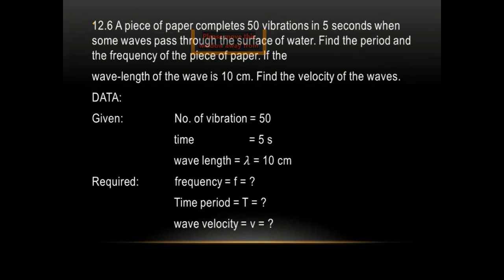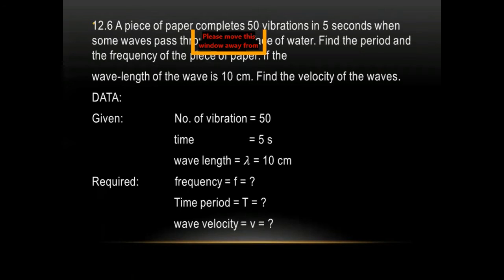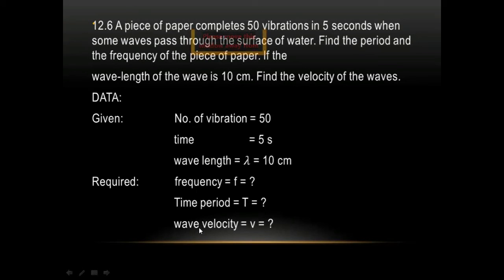Numerical 12.6: A piece of paper completes 50 vibrations in 5 seconds as waves pass through the surface of water. Find the time period and frequency. The wavelength of the wave is 10 cm — find the velocity. In the data: number of vibrations = 50, time = 5 s, wavelength = 10 cm. Required: frequency, time period, and velocity.